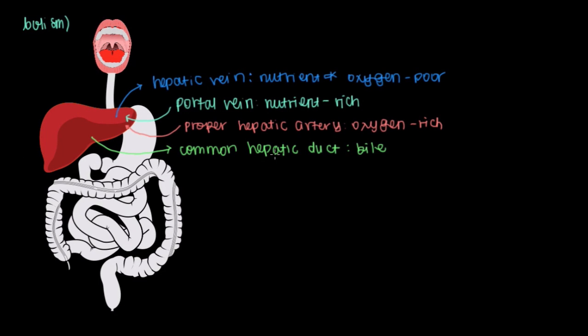We've talked about a lot of vessels here. The main three that we should focus on are the portal vein, the hepatic artery, and the common hepatic bile duct.